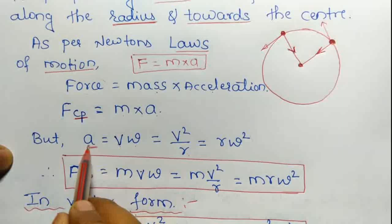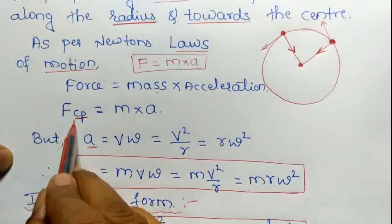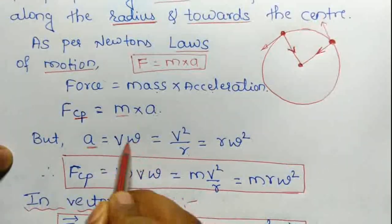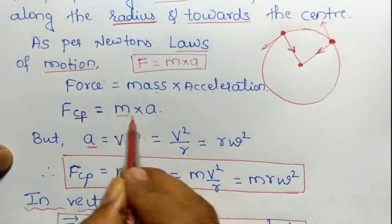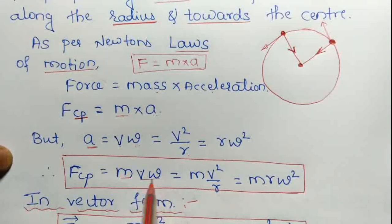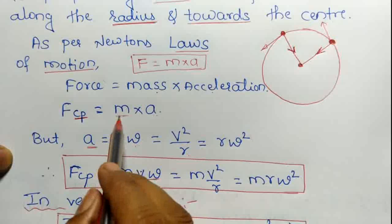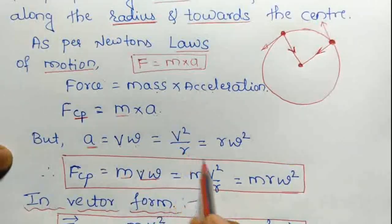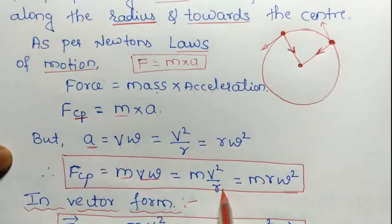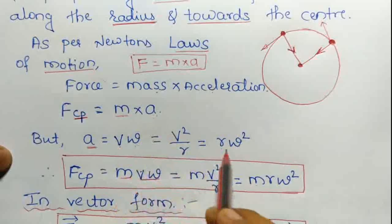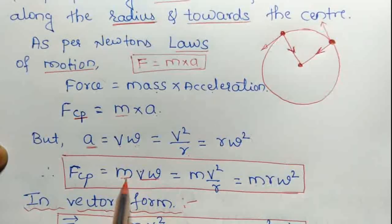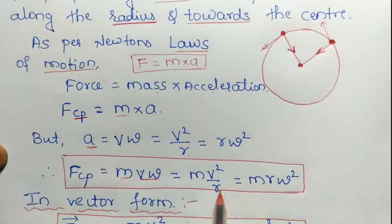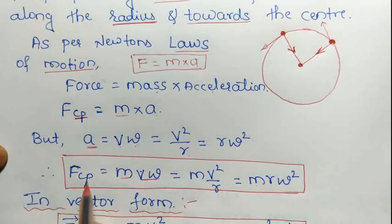Substituting these acceleration formulas: FCP equals M into V into omega, which equals M into V squared upon R, which equals M into R into omega squared. So these are the three formulas for centripetal force.